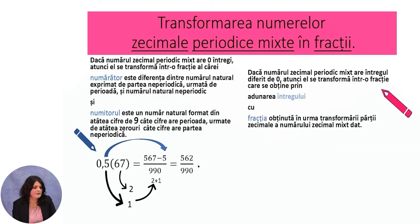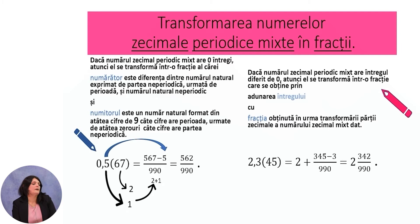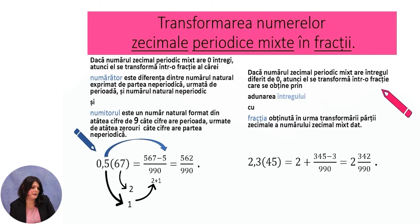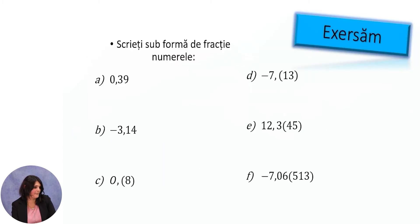If the mixed periodic decimal number has an integer part different from 0, it transforms into a fraction obtained by adding the integer part to the fraction from transforming the decimal part. For example, 2.3(45) equals 2 plus the transformed fractional part: 345 minus 3 over 990, since there are two digits in the period and one non-periodic digit. We obtain 2 and 342/990.